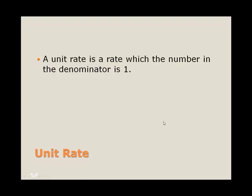A unit rate is a rate in which the number in the denominator is equal to 1. So sometimes we might be interested in finding unit rates, and so we reduce everything, even if the numerator might have to become a decimal.